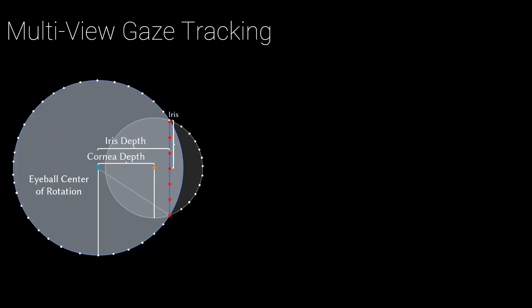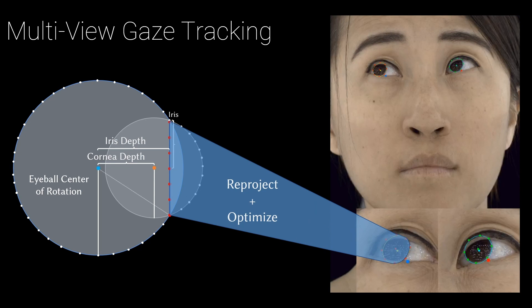For gaze tracking, we fit a simple model based on the union of two spheres to multi-view images of subjects' eyes. We reproject key points along the limbus boundary into the multi-view images and optimize the position and orientation of the eyeball in each frame to match these key points.